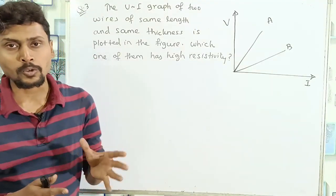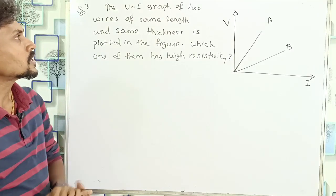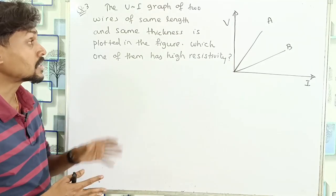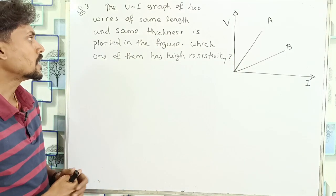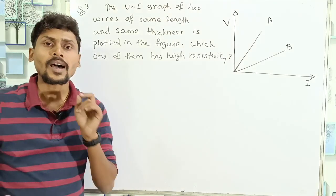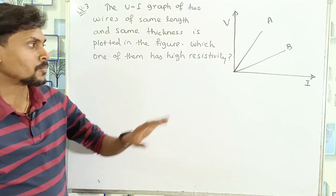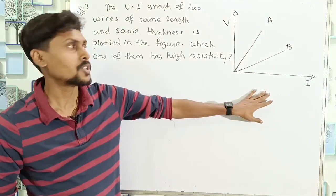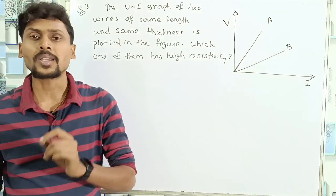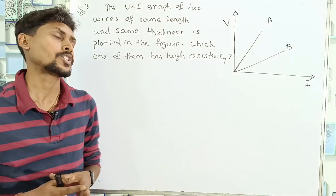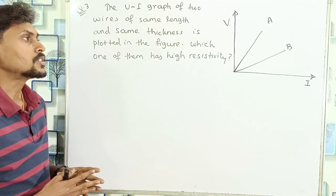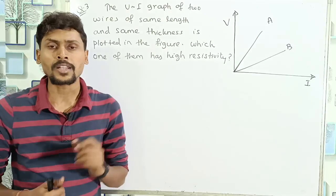Now look at question number 3. The voltage versus current graph of two wires A and B of the same length and same thickness — same area of cross section — is plotted in a figure. Which one of them has higher resistivity? We need to predict which conductor has higher resistivity from the V-I graph.